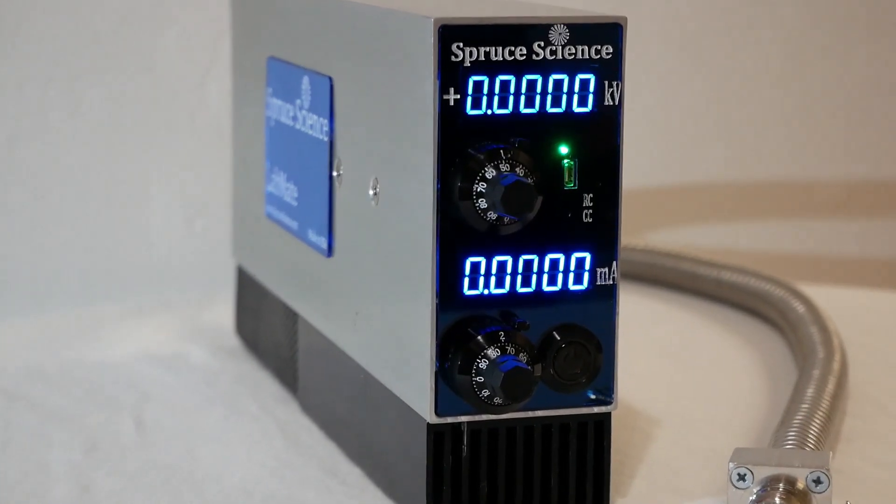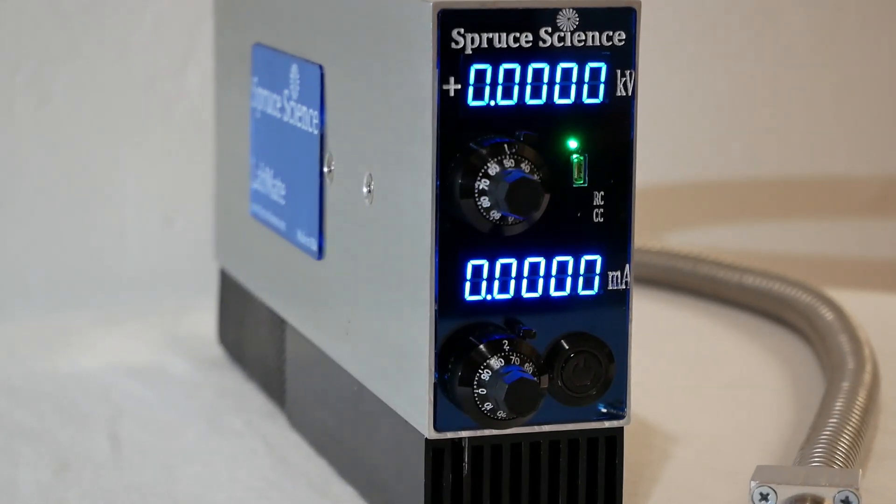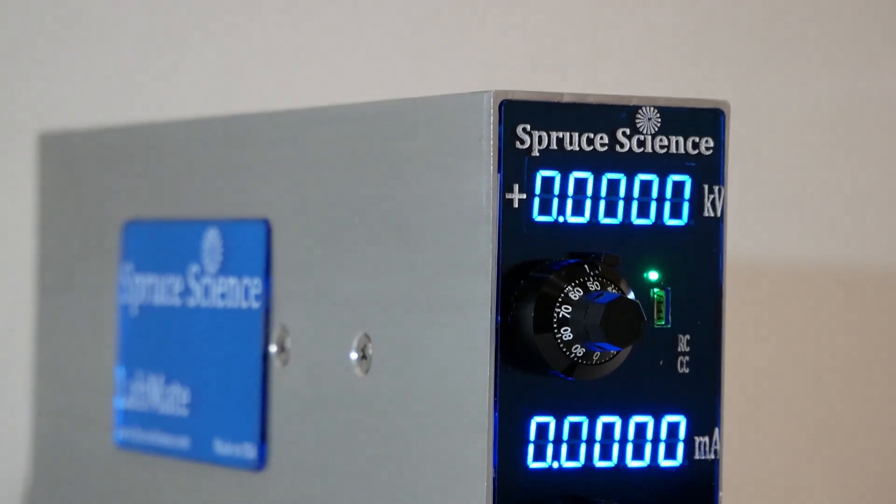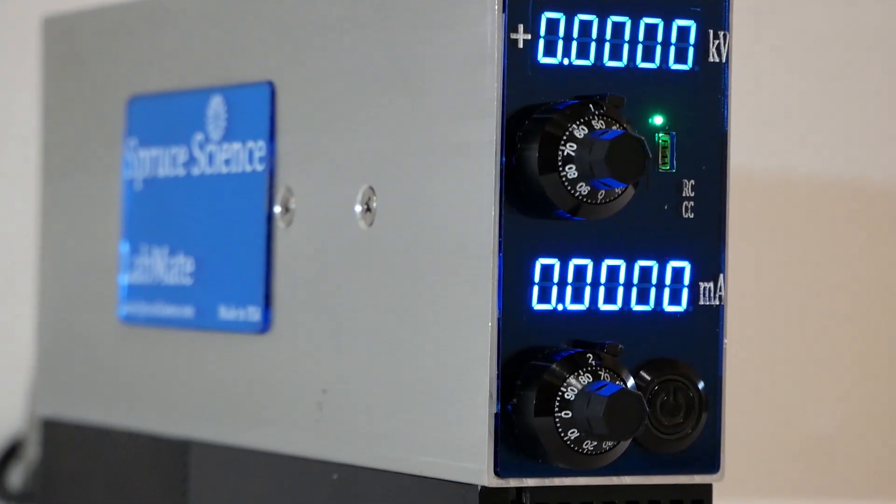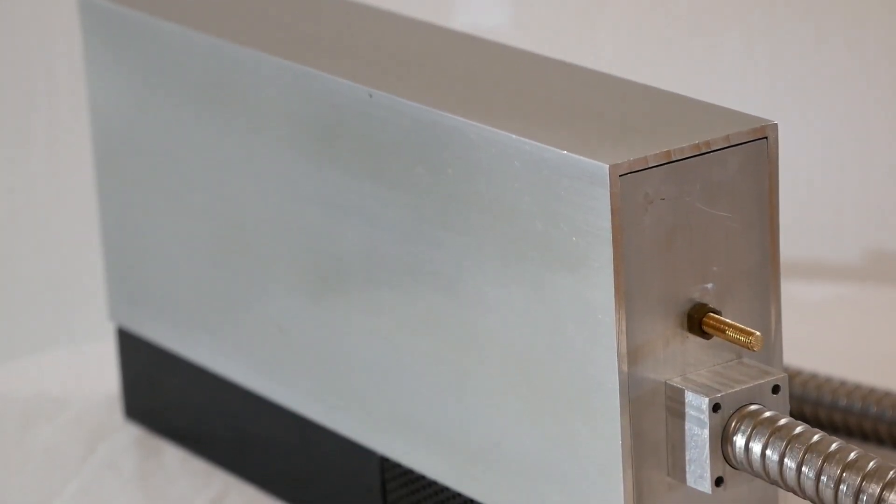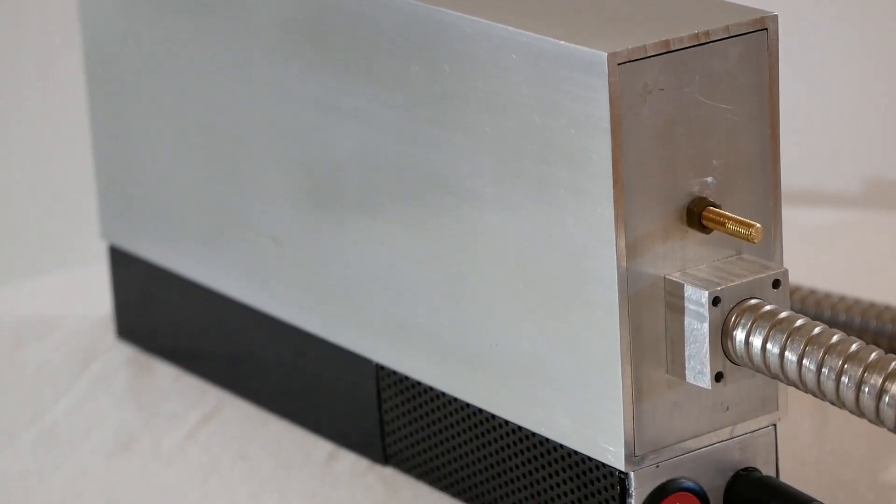It gives you dual adjustment dials and digital displays for both voltage and current modes of control. The turn counting dial and 5-digit precision display on the front allows for accurate control and adjustment, offering both high stability and ultra-low ripple.